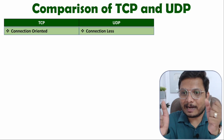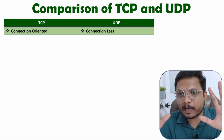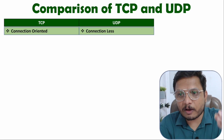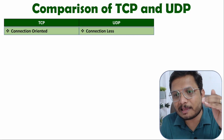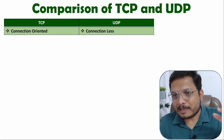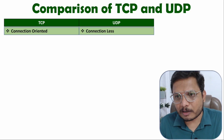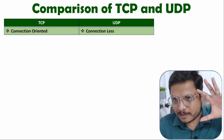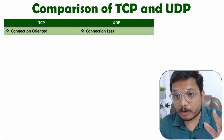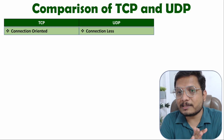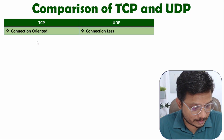In UDP, that asking and acknowledgement process does not happen — the transmitter transmits data irrespective of whether the receiver is receiving or not. That is connectionless. Like on JioCinema watching a live IPL match, the server does not bother about whether you receive data properly; it sends data continuously regardless of your connection quality.